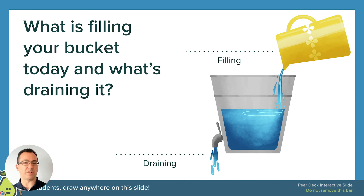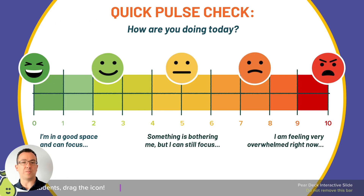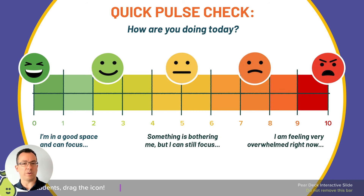You can have a conversation using an analogy like a bucket of water and ask what's filling and emptying your bucket that day. Or you can use a tool like Pear Deck's interactive mood meter, where students can anonymously place a line on screen and you can get the collective impression of where your whole class's head is at.